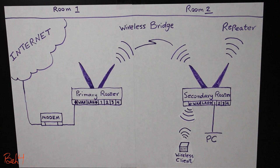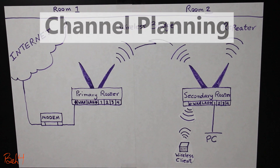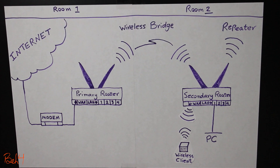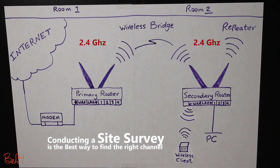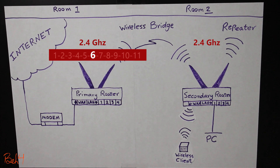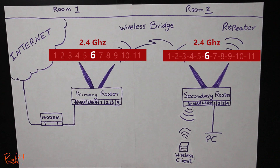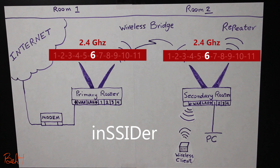Alright, so that brings us to the subject of channel planning. Because the repeater and the main router have to be on the same channel, it is very important to choose a channel that is least crowded and least utilized in your environment. This is something that should be configured on the primary router, and the DD-WRT router will automatically use the same channel. I personally use a software called Insider to determine the best possible channel in the environment.